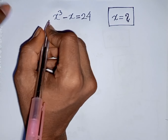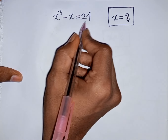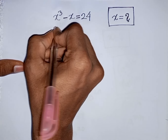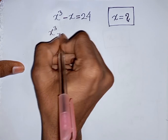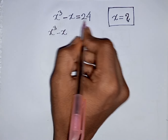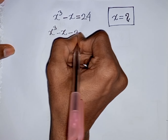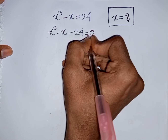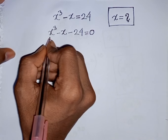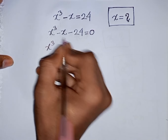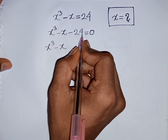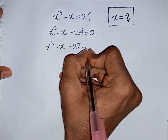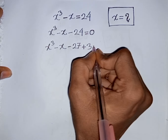How to solve x³ - x = 24. Find the value of x. We have x³ - x, then take +24 to the left side, so it will be x³ - x - 24 = 0. Now, -24 can be written as -27 + 3, so x³ - x - 27 + 3 = 0.